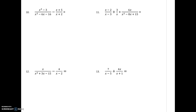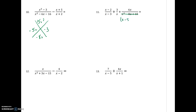I'll be doing the odds again. Number 11: in the first two fractions I cannot factor those, but in my third fraction I can factor that. So I'm going to move over here for space. Factors of 15 that get me to negative 8 are going to be negative 5 and negative 3, and so I can rewrite this as x minus 5 and x minus 3.